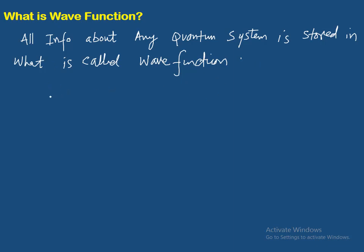Mathematically, wave function ko psi symbol se represent kiya jata hai. Iske alawa bhi Greek letters use kiye ja sakte hain, but conventionally hum psi se represent karte hain. Ye wave function basically space aur time ke coordinates ka, variables ka function hota hai.